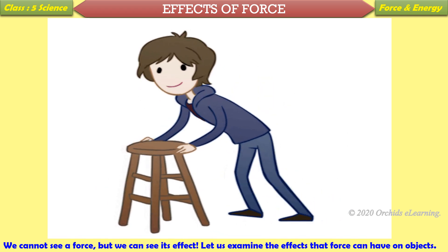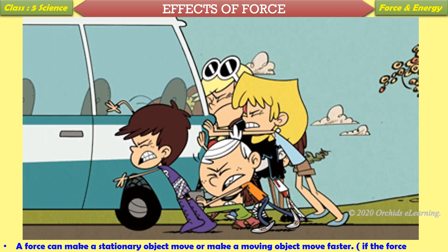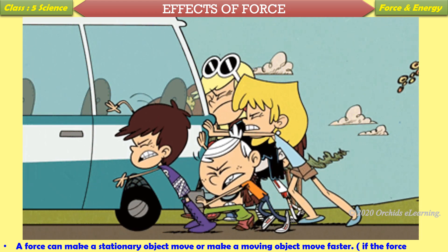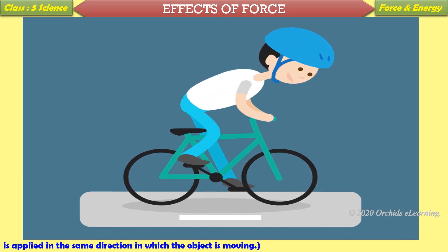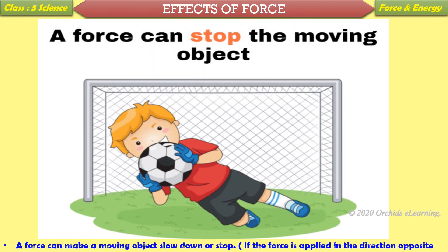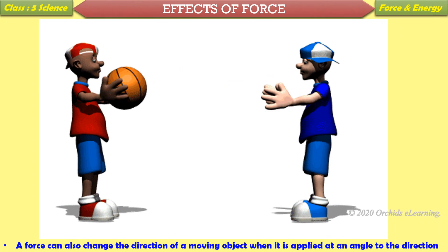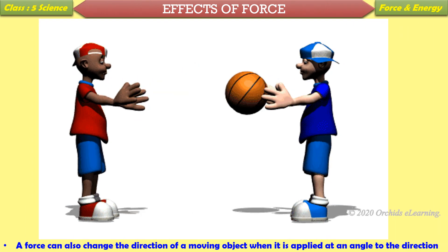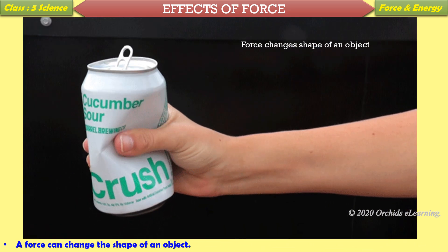Effects of force: We cannot see a force but we can see its effects. A force can make a stationary object move, or make a moving object move faster, if the force is applied in the same direction. A force can make a moving object slow down or stop if applied in the opposite direction. A force can also change the direction of a moving object when applied at an angle. A force can change the shape of an object.